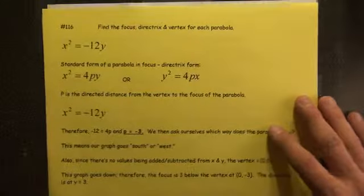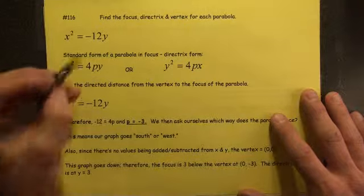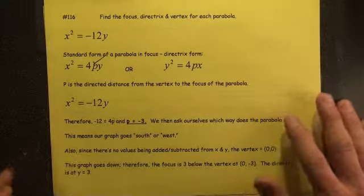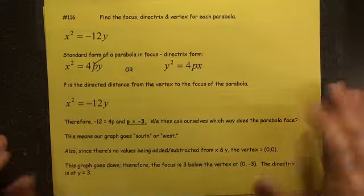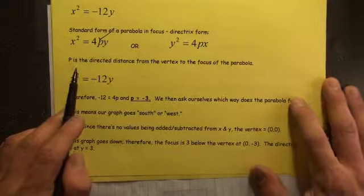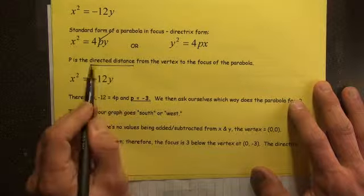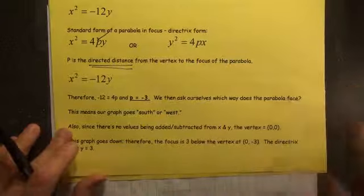The P value allows us to find that focus. P is called the directed distance from the vertex to the focus of the parabola.